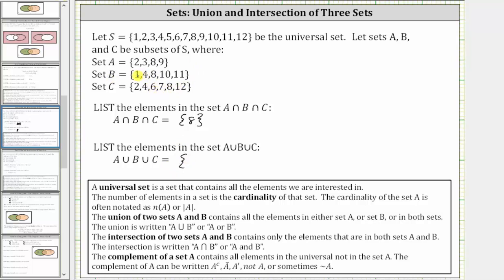Set B contains the element one, so one is in the union. The element two is in set A and set C, so two is in the union. The element three is in set A, so three is in the union. Four is in set B and set C, so four is in the union. Notice five is not in any of the sets, so five is not in the union. Six and seven are in set C, so six and seven are in the union. Eight is in all three sets, so eight is in the union. Nine is in set A, so nine is in the union. Set B contains the elements 10 and 11, so 10 and 11 are in the union. And finally, set C contains the element 12, so 12 is in the union.